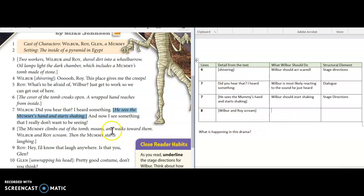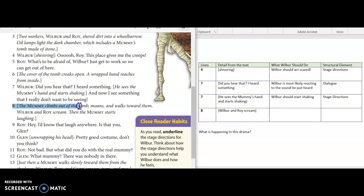Now let's look at this last detail from the text in line eight: 'the mummy climbs out of the tomb and walks toward them Wilbur and Roy scream.' We're focused in on this part: Wilbur and Roy scream. So what should they do? Well Wilbur should scream as soon as he sees the mummy appear. And the structural element that they're referring to again is stage directions.